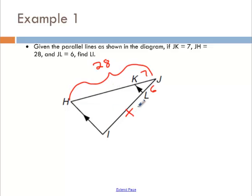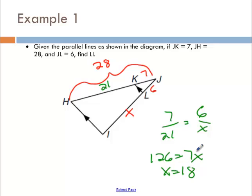In order to find LI, I could do one of two things. I could look at the two triangles that are similar, or I could use the side splitter theorem. Since this segment KJ over here is 7 and the whole thing is 28, I know that this part right here is 21. So, 7 over 21 is the same as 6 over x. Cross multiply. 126 equals 7x. Divide by 7, x gets you 18.